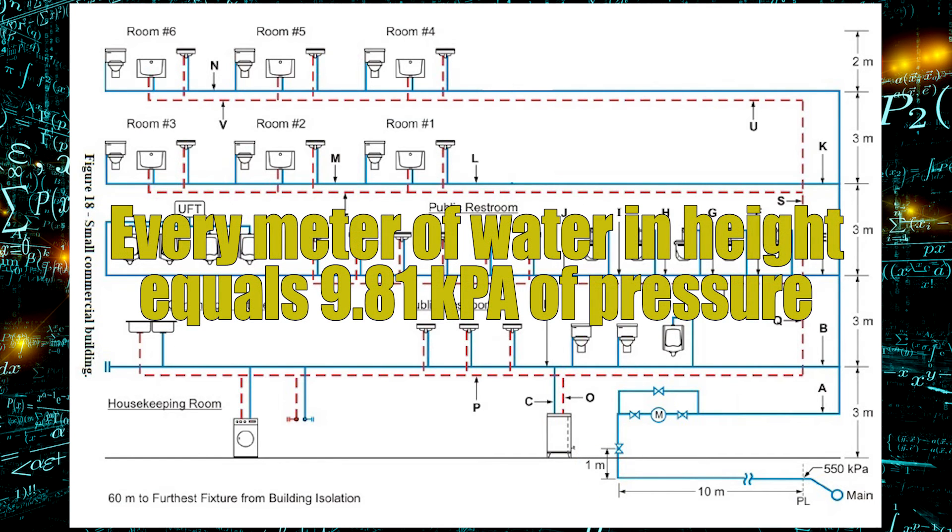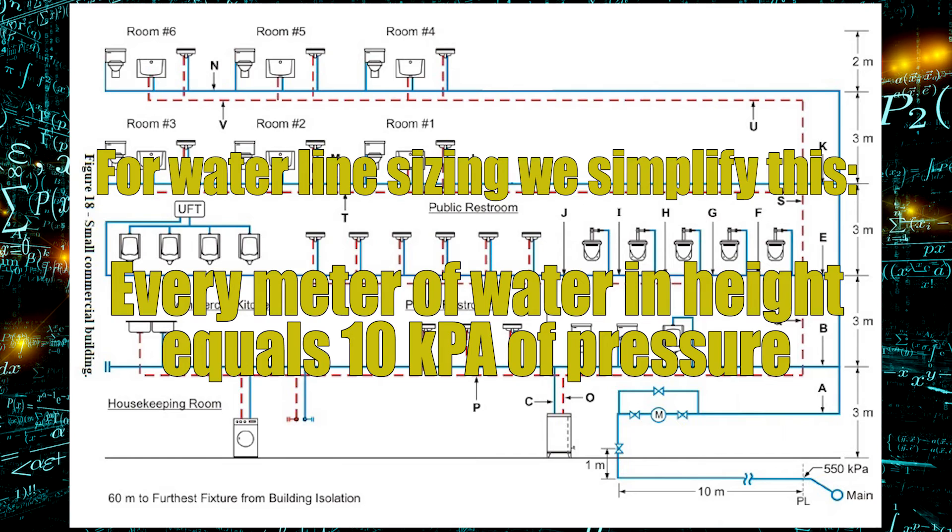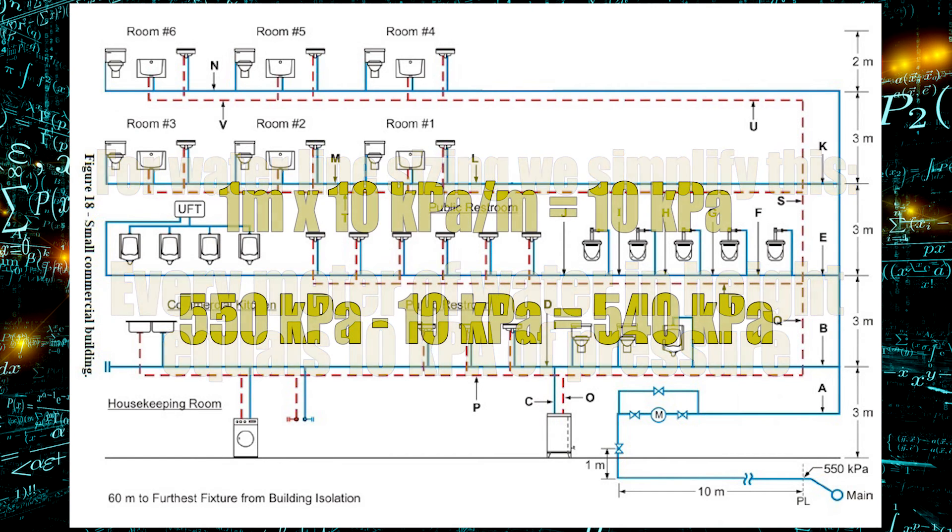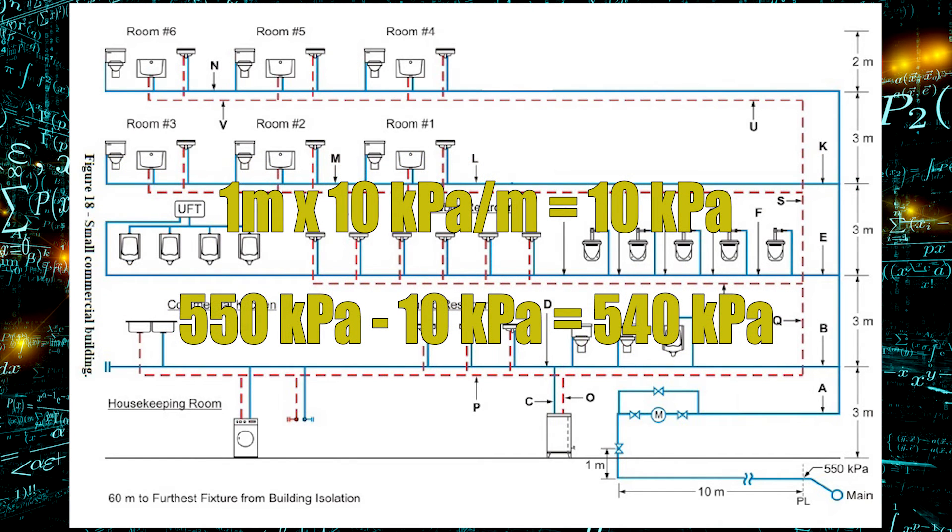For kPa, every meter of water we travel up we lose 9.81 kPa but for waterline sizing we simplify that number to 10. So we will have 10 kPa for every one meter of vertical rise. Let's take that one meter of rise multiply that by 10 and we have a pressure loss of 10 kPa. So 550 kPa at the main minus 10 kPa equals 540 kPa that we're going to use for waterline sizing.